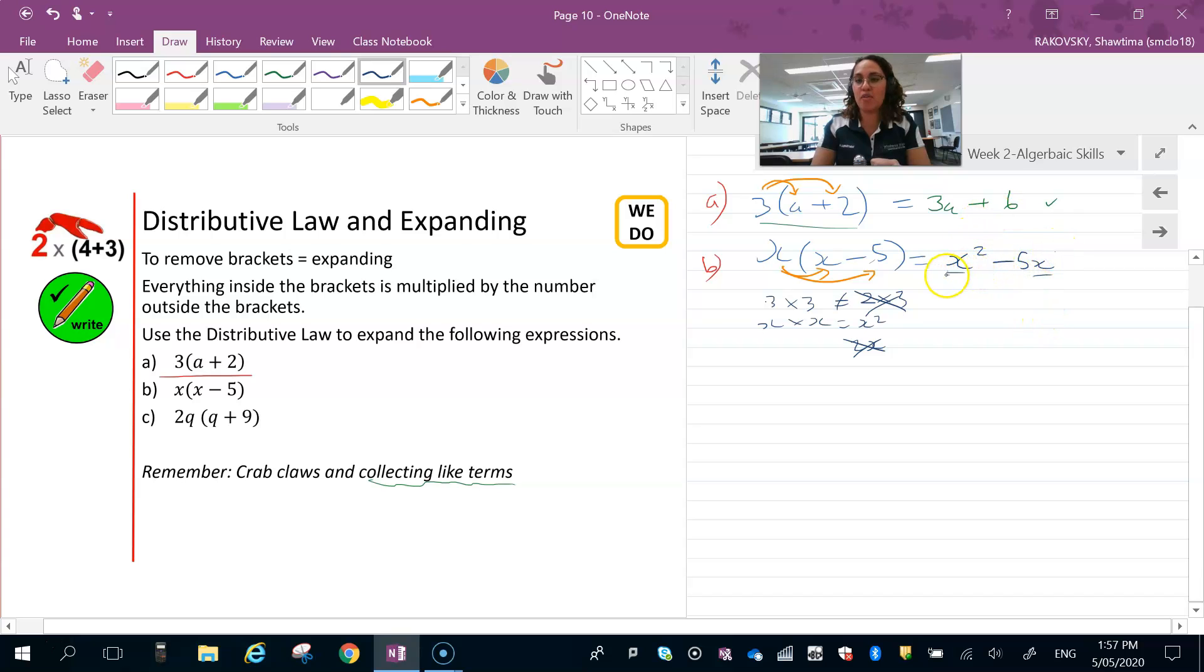All right, and with c, now this one is 2q times q plus nine. Again we distribute across our terms. If you really are a bit stuck, what you can do is go and write these out: 2q times q plus 2q times nine.